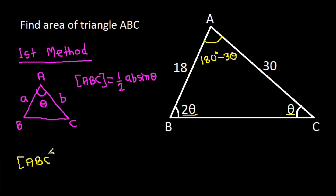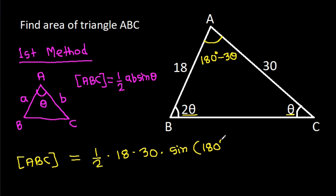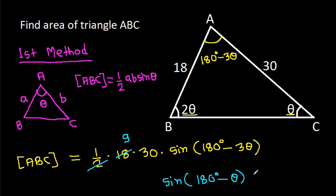So, area of triangle ABC will be equal to 1/2 times AB times AC times sine of the included angle. That is 1/2 times 18 times 30 times sine of (180 degrees minus 3 theta), which simplifies since sine(180° − 3θ) = sine(3θ).